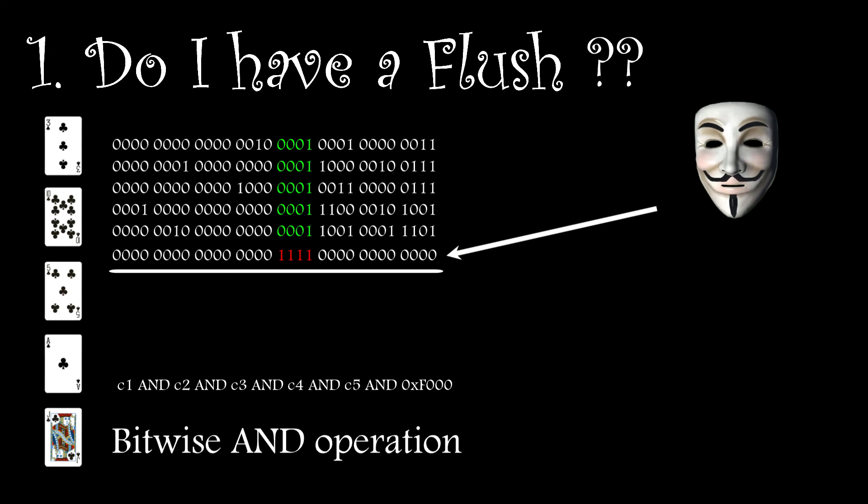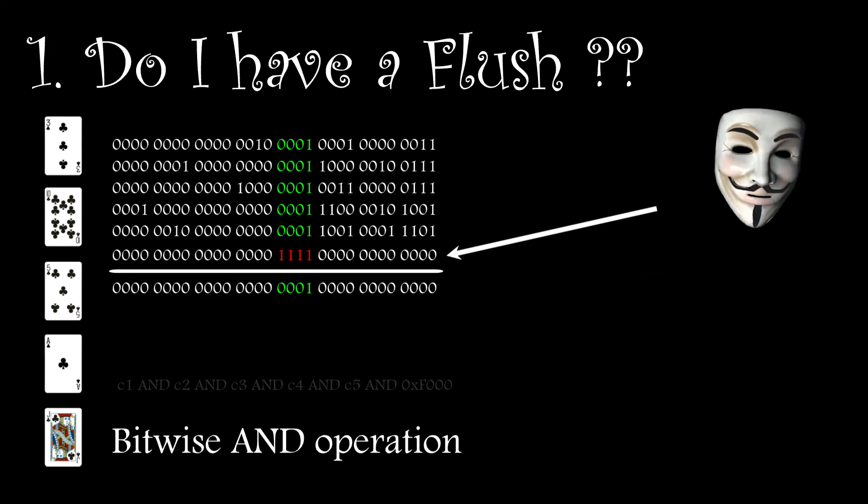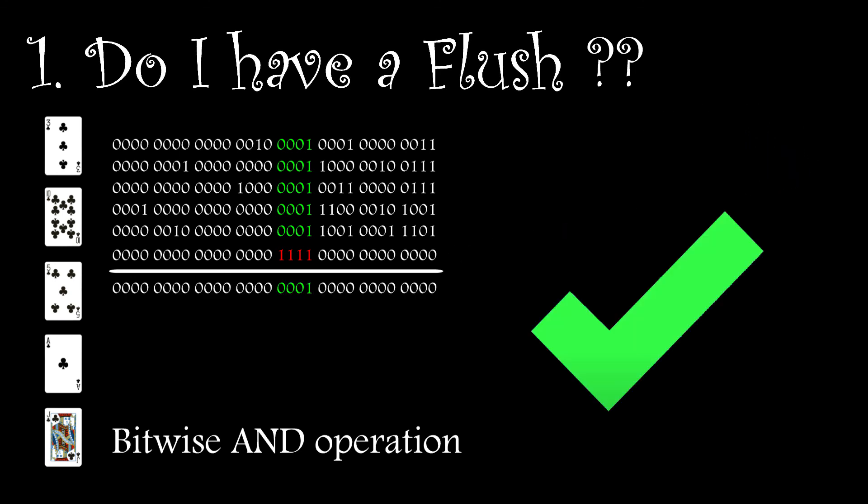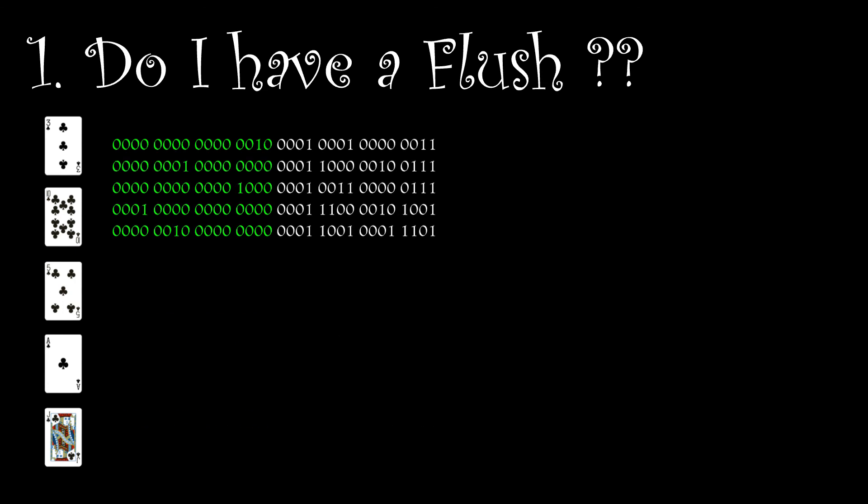If this yields a non-zero value then we have a flush. That's the first check. So if we have a flush we then look at the bit scheme as before and apply a bitwise OR operation to it and bit shift it 16 bits to the right.